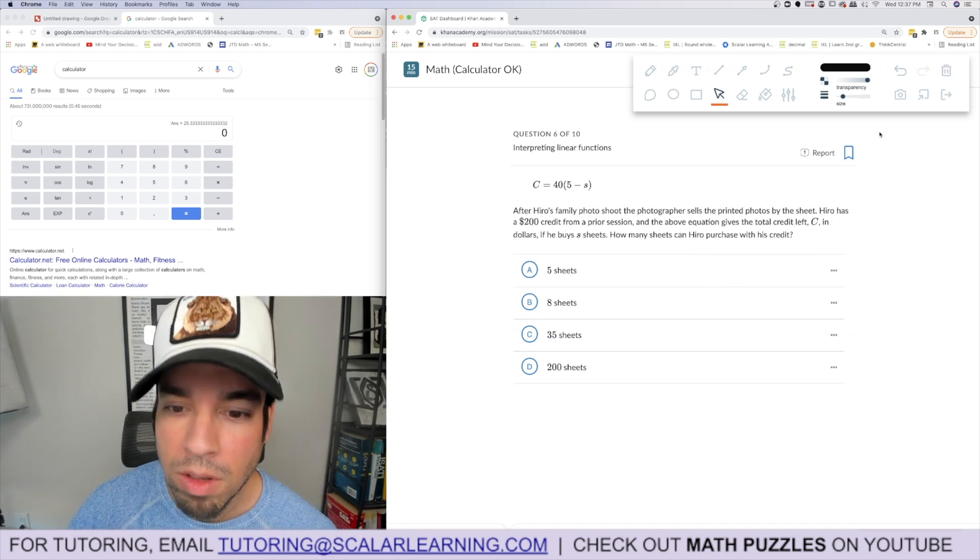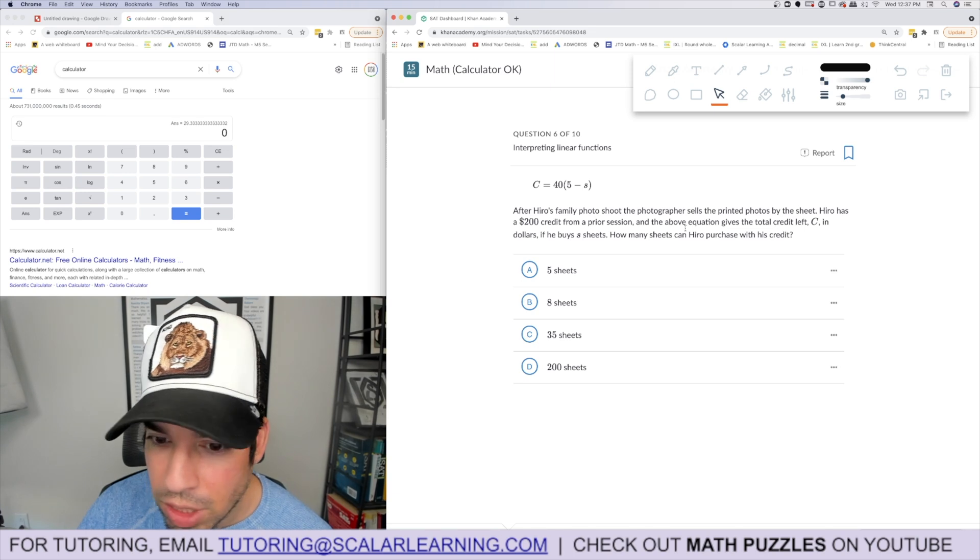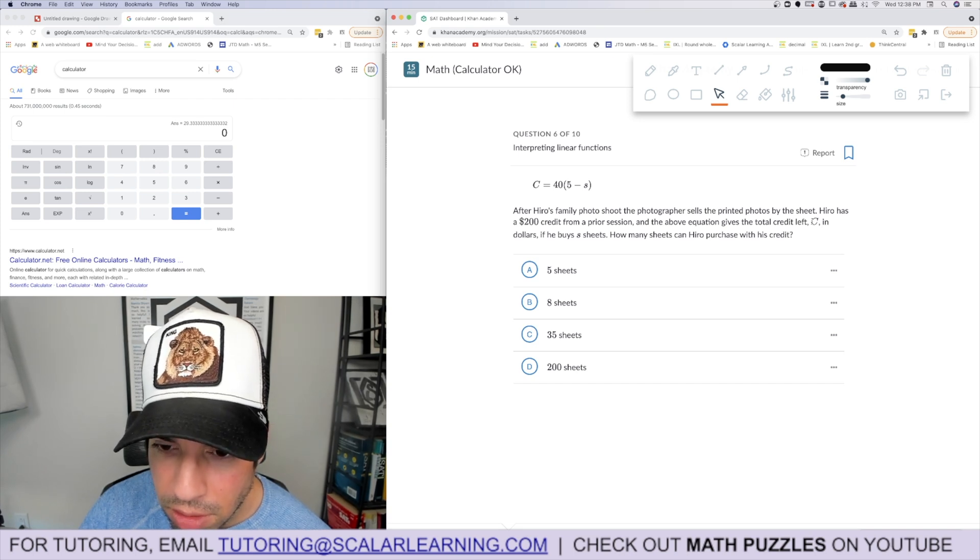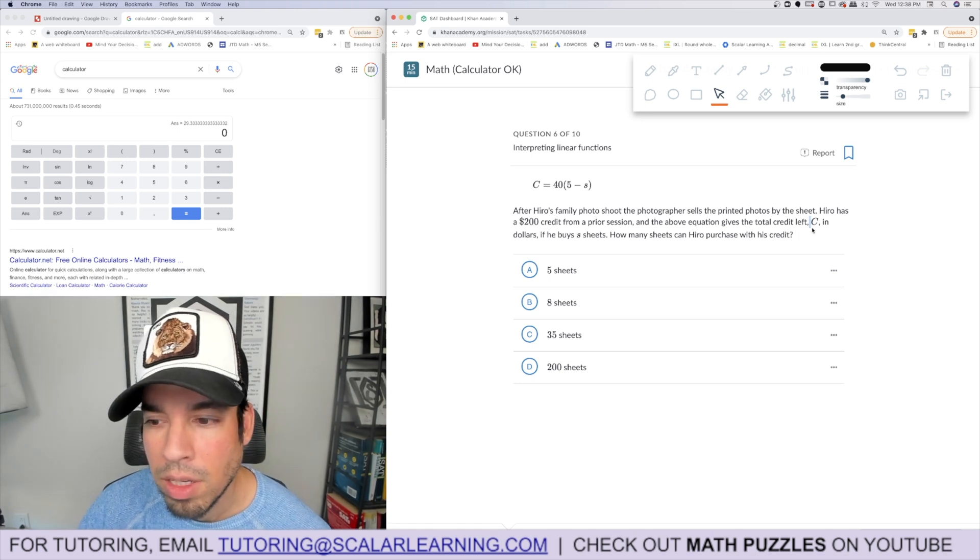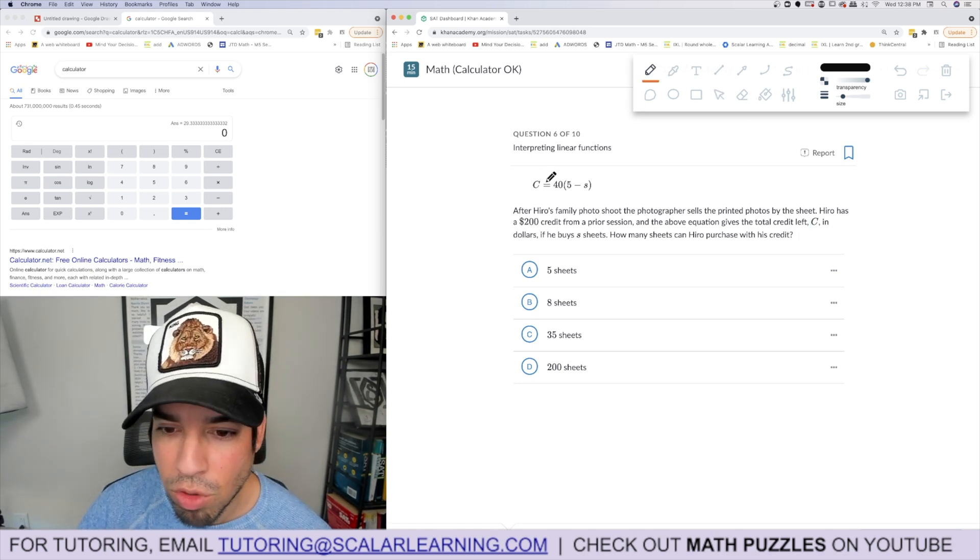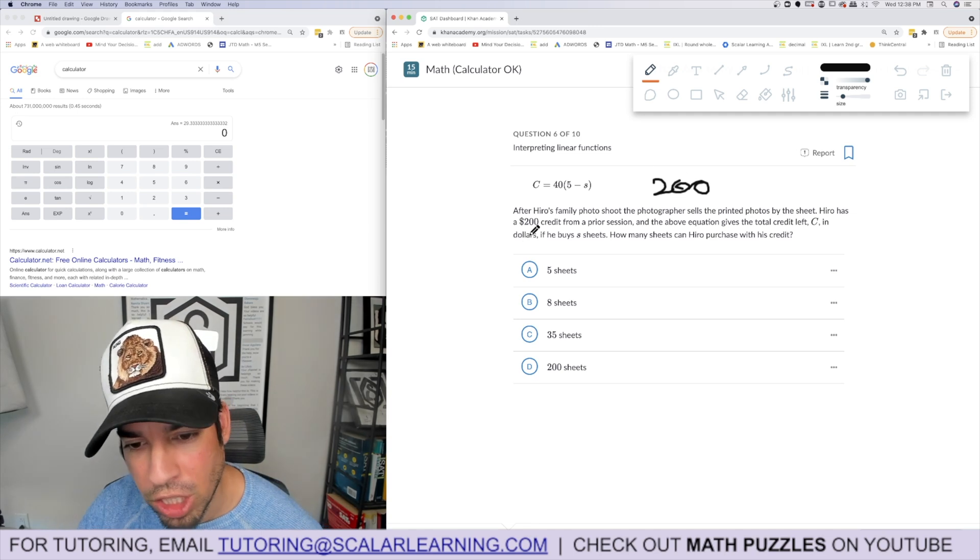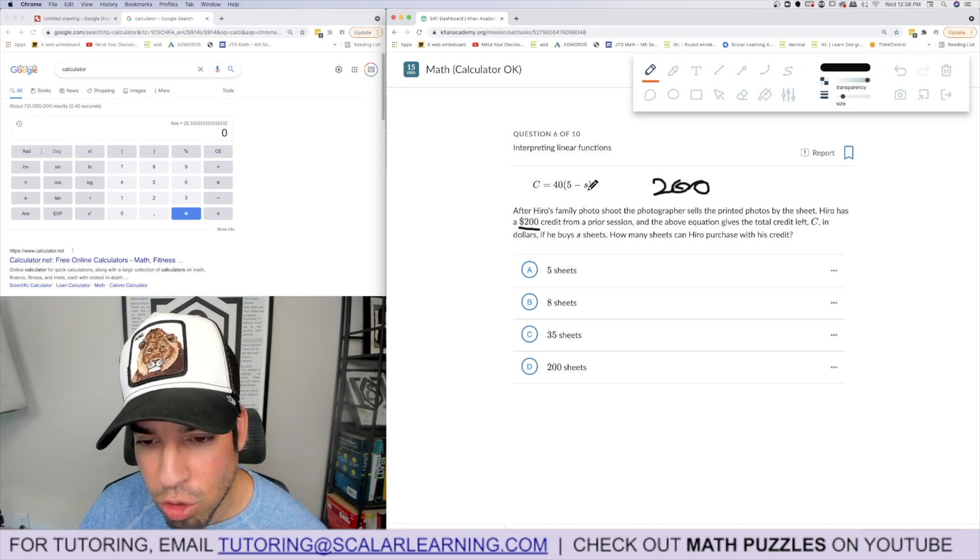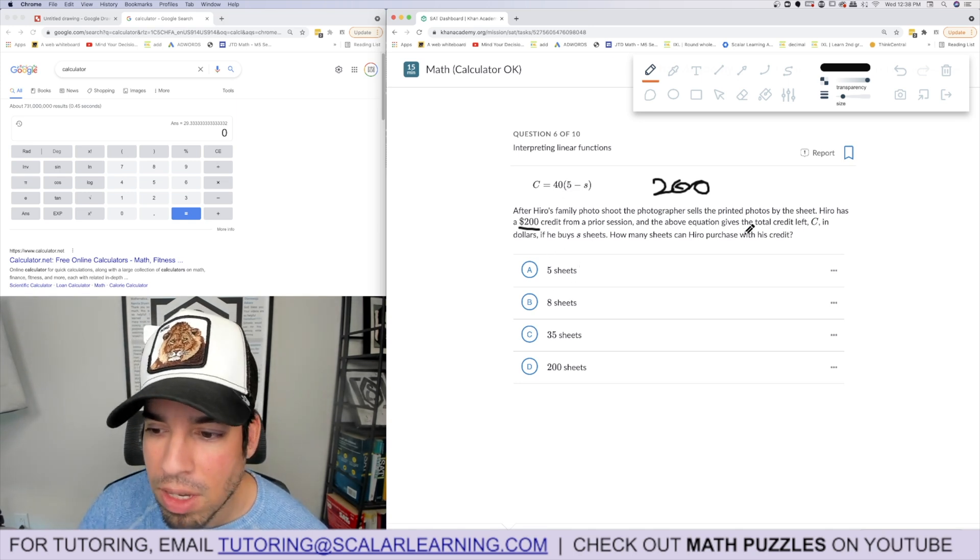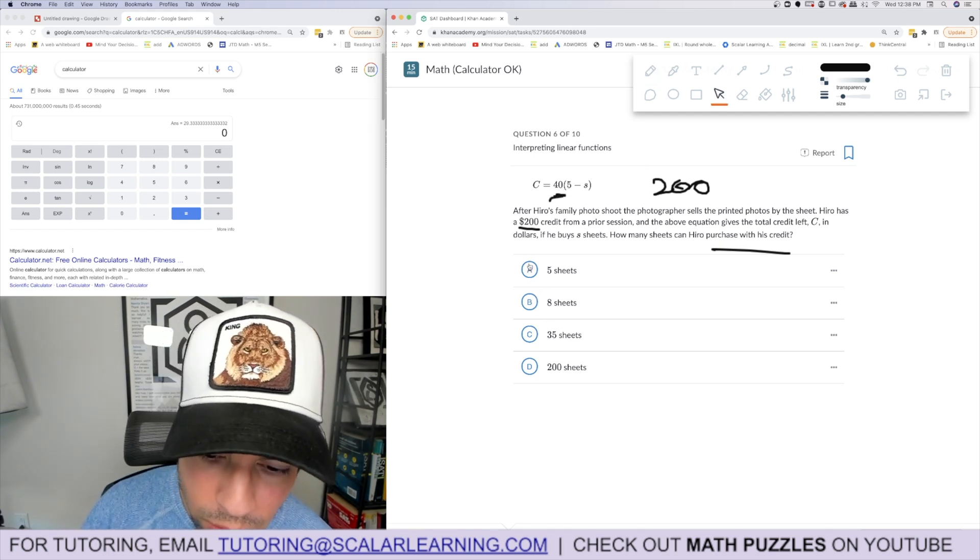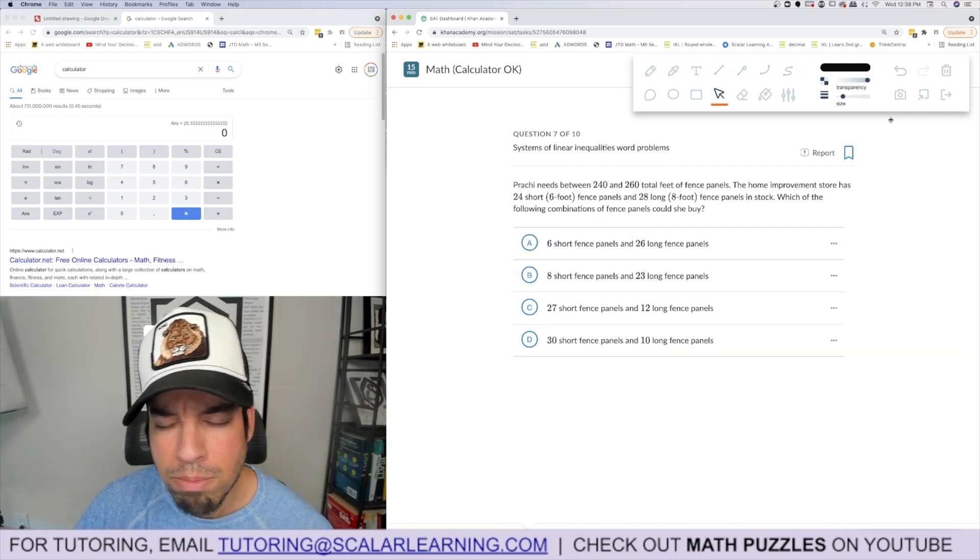After Hero's family photo shoot, the photographer sells printed photos by the sheet. Hero has a $200 credit from a prior session, and the equation gives the total credit left in dollars if he buys s sheets. He can buy 5 sheets because that's when the credit zeros out. If you plug in zero for s, you get 40 times 5 which is 200, so that's zero sheets, he's got the full credit. Each sheet costs 40 bucks. I've seen this problem before too.